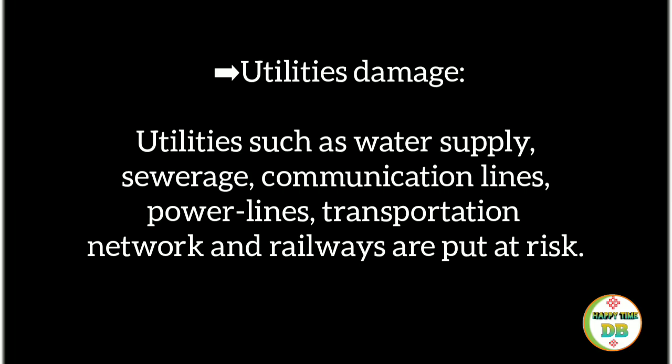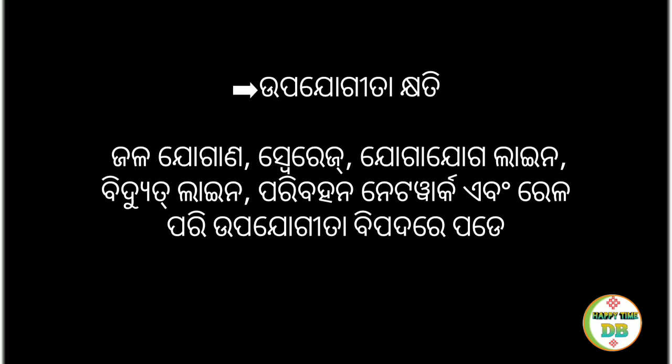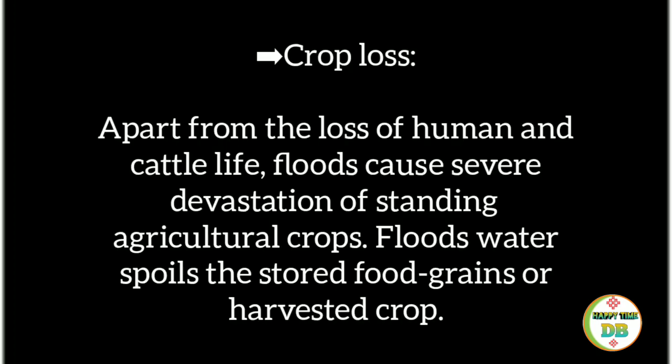Utilities Damage: Utilities such as water supply, sewerage, communication lines, power lines, transportation networks, and railways are put at risk. Crop Loss: Apart from the loss of human and cattle life, floods cause severe devastation of standing agricultural crops. Flood water spoils the stored food grains or harvested crop.